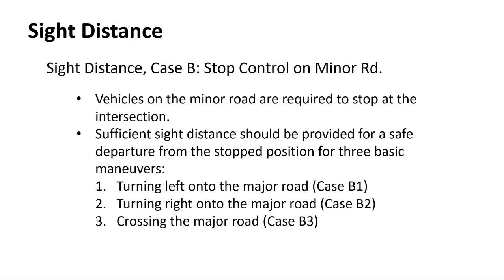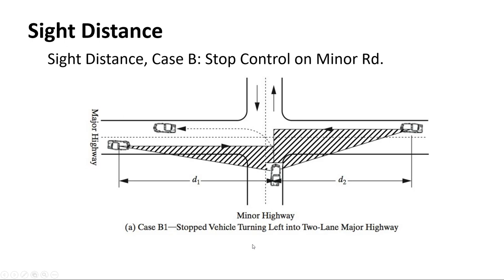Most of our cases are Case B — stop control on the minor road — where every vehicle approaching must stop. We're not worried about an approach sight triangle here because, knowing the minor road has to stop, we only check that the driver can see the stop sign early enough to safely stop. Everything for Case B is a departure sight triangle. We break Case B into sub-cases B1, B2, and B3: turning left onto the major road, turning right, or crossing straight across.